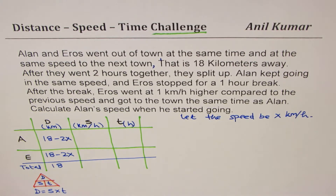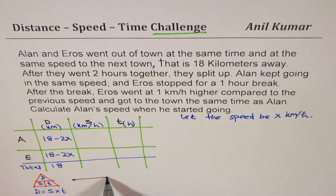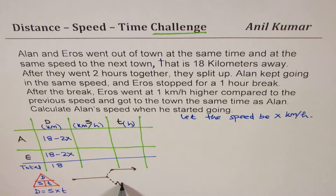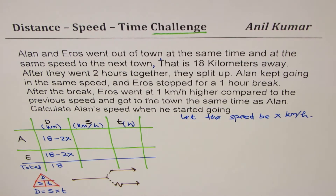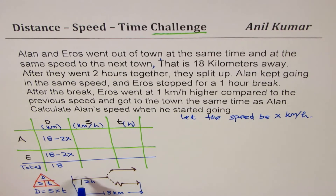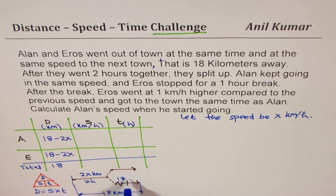The story is like this: they start together, cover some distance, and then they split. At that point, Ellen keeps going while the other one stops and takes a break, then leaves. The question is how they reach at the same time. They are together for two hours, the total distance is 18 kilometers, and in two hours they cover 2x kilometers, so the remaining distance is 18 minus 2x.